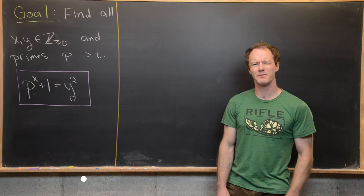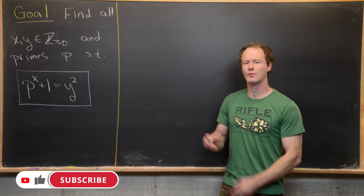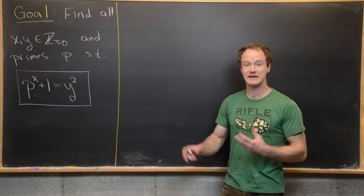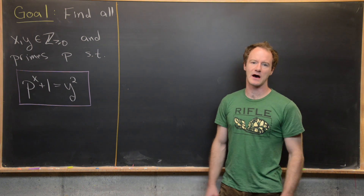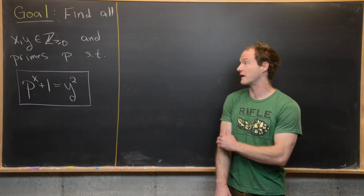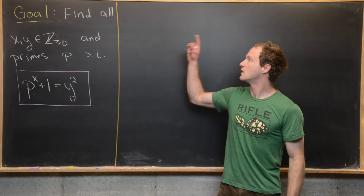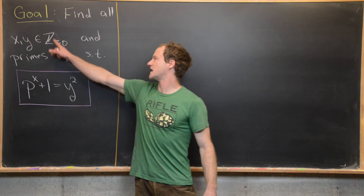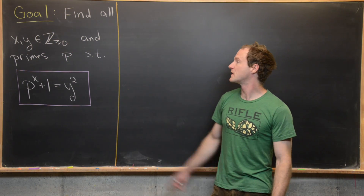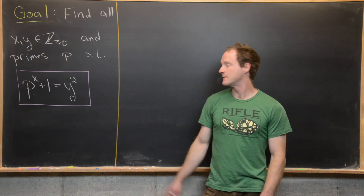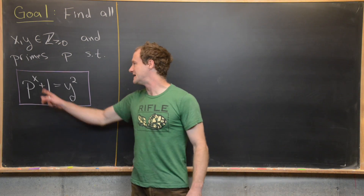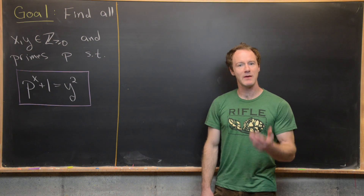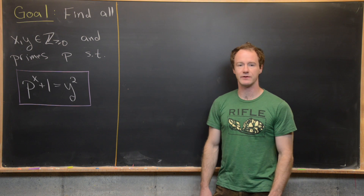Here we're going to look at a nice and quick number theory problem. What I like about this problem is that we are only going to use very simple methods like straightforward arithmetic and the definition of prime numbers — we don't have to worry about congruence modulo n or anything like that. Our goal is to find all x and y which are non-negative integers, and prime numbers p, satisfying the equation p to the x plus one equals y squared. Maybe if you want to try this problem, go ahead and pause the video and give it a go.